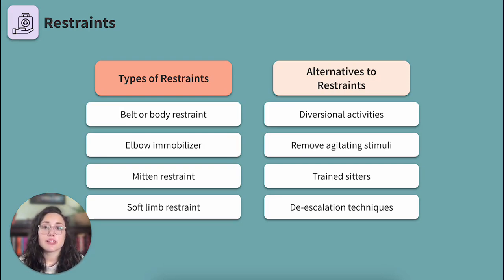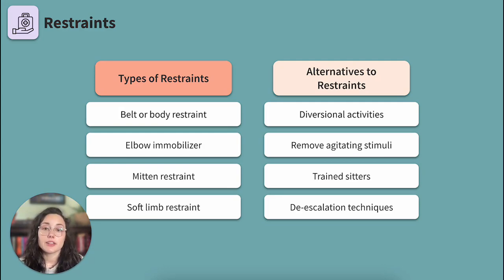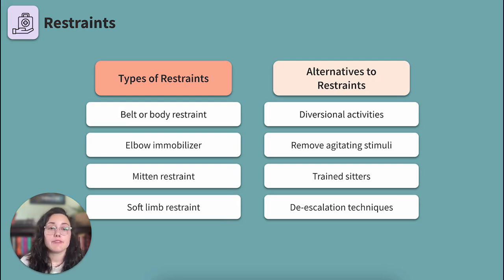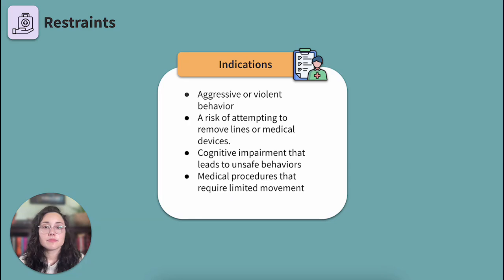It is important to move from least to most invasive interventions. Here are some alternatives to restraints — use these if appropriate. We can offer diversional activities, try to remove agitating stimuli such as bright fluorescent hospital lights or a beeping IV pump, use trained sitters, or use de-escalation techniques. De-escalation techniques address client behavior in a respectful, empathetic, and non-judgmental manner and can make a big difference in the safety of clients and staff.